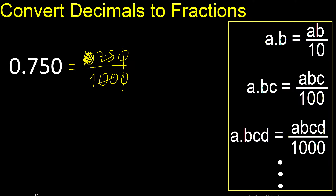Divided by 5, divided by 5 — gives 15; divided by 5 gives 20. Can be divided by 5: divided by 5 is 3, divided by 5 is 4.